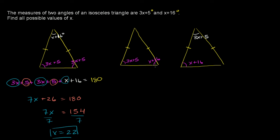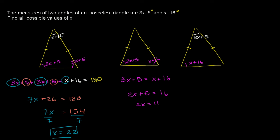Now let's think about the second scenario. These two angles are going to be equal to each other because they're both the base angles. So 3x plus 5 equals x plus 16. Subtracting x from both sides gives 2x plus 5 equals 16. Subtracting 5 gives 2x equals 11, and dividing both sides by 2 gives x equals 11 halves.